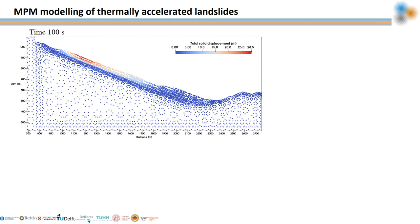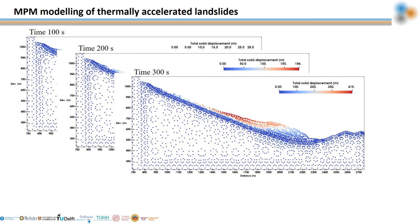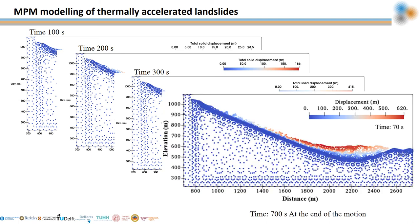A case of seismic-induced landslide is modeled. The results in terms of total displacement show that the maximum displacement observed in the field was between 500 m and 1 km. Without thermal effects, the unstable mass moved only a few centimeters, demonstrating the critical role of thermal pressurization.